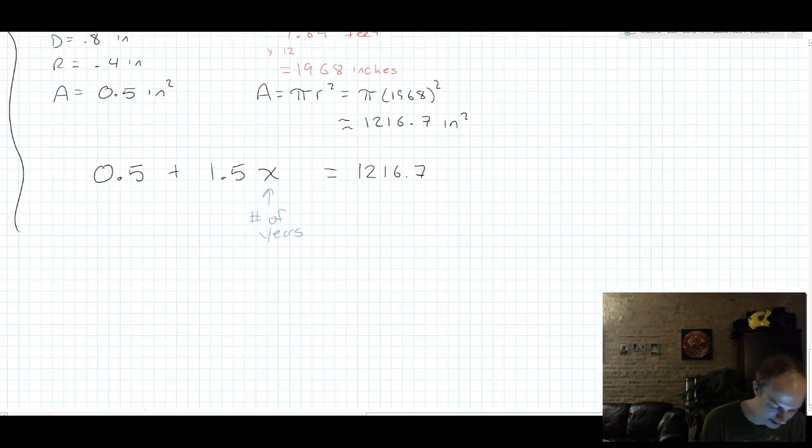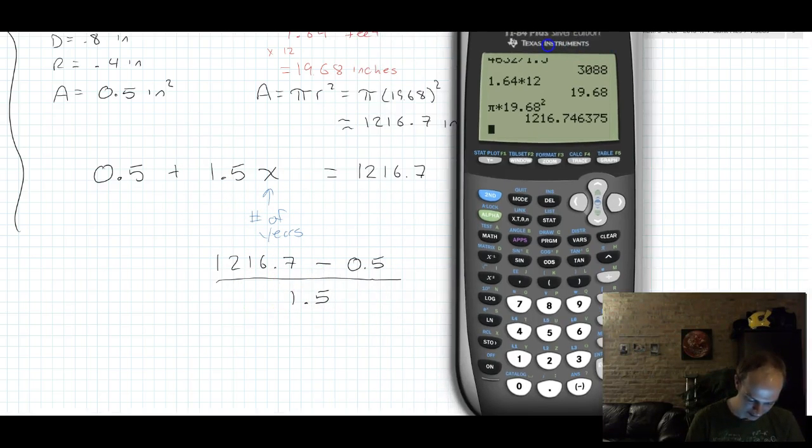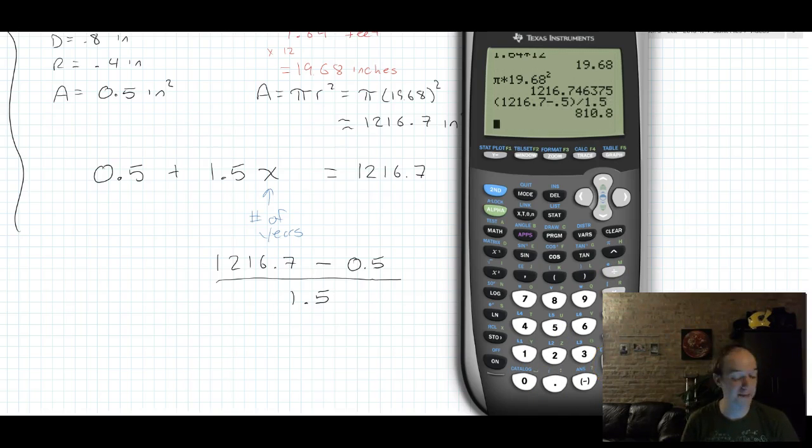So to solve this, we're going to do 1,216.7 minus 0.5, and then divide that by 1.5. I'm doing this in one step now so that I can put just this whole thing in my calculator. So we'll do a parenthesis, 1,216.7 minus 0.5, close parenthesis, and divide by 1.5. If you want to do this in multiple steps, feel free. And we get an answer of 810.8 years.